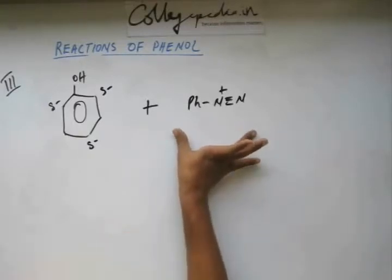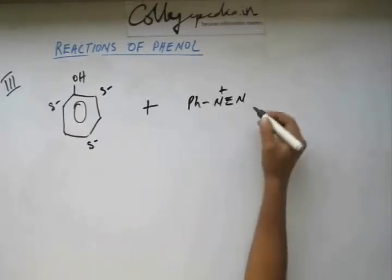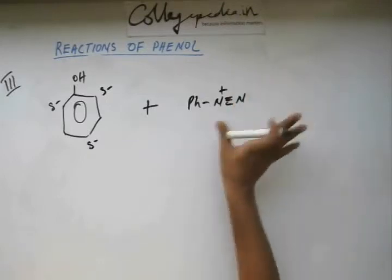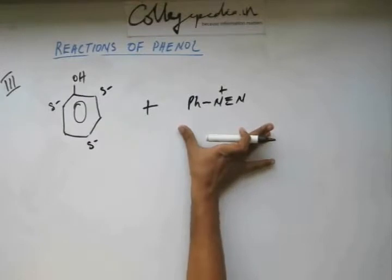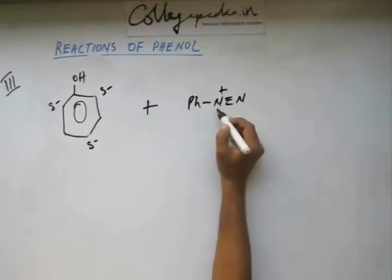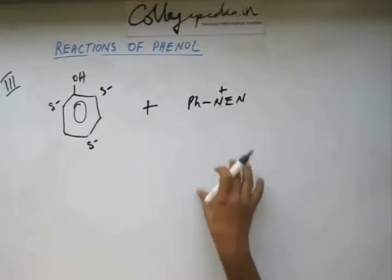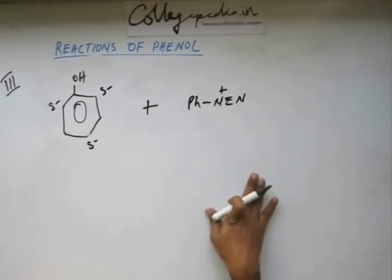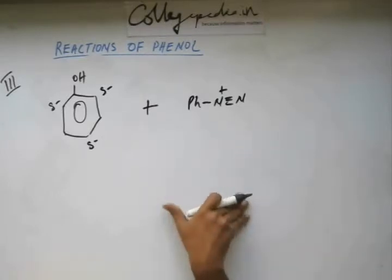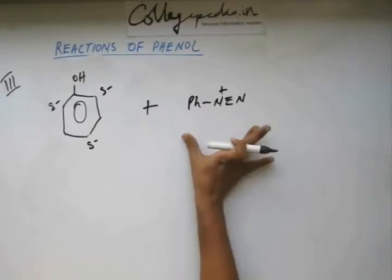This is a diazonium salt. There will be an anion corresponding to this, we are not concerned with that. This nitrogen is a very good leaving group. Now, somehow if you're not allowing this to leave by keeping the temperature low and not adding any other nucleophile into the system, this diazonium salt will remain as it is.